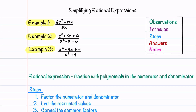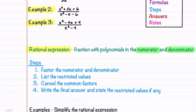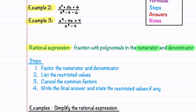Before we go over the simplification steps, let's quickly review what a rational expression is. It's a fraction with polynomials in both the numerator and the denominator. The four steps that we can use to simplify a rational expression are listed here, and I'll go over these more in depth as we walk through our example problems.